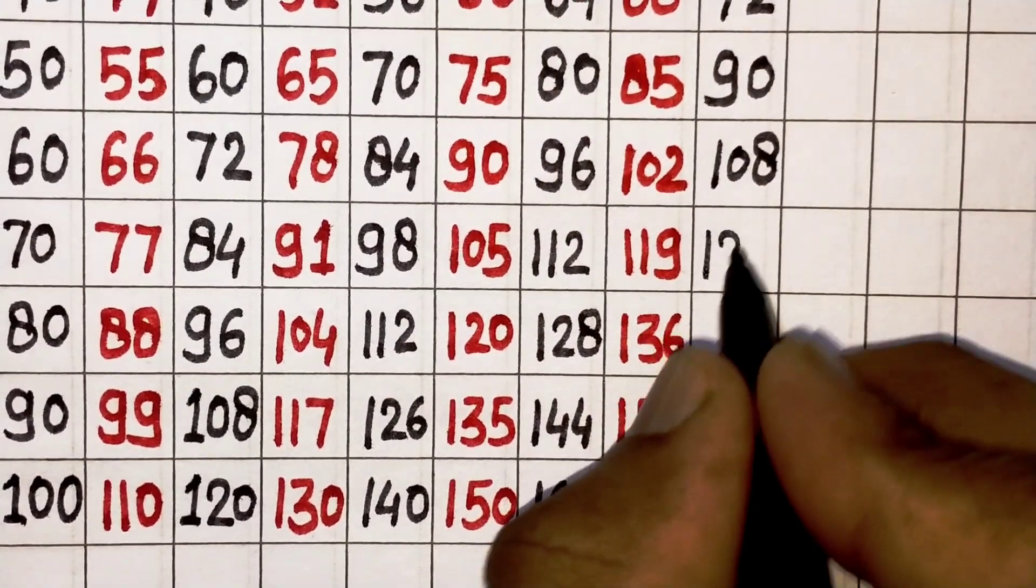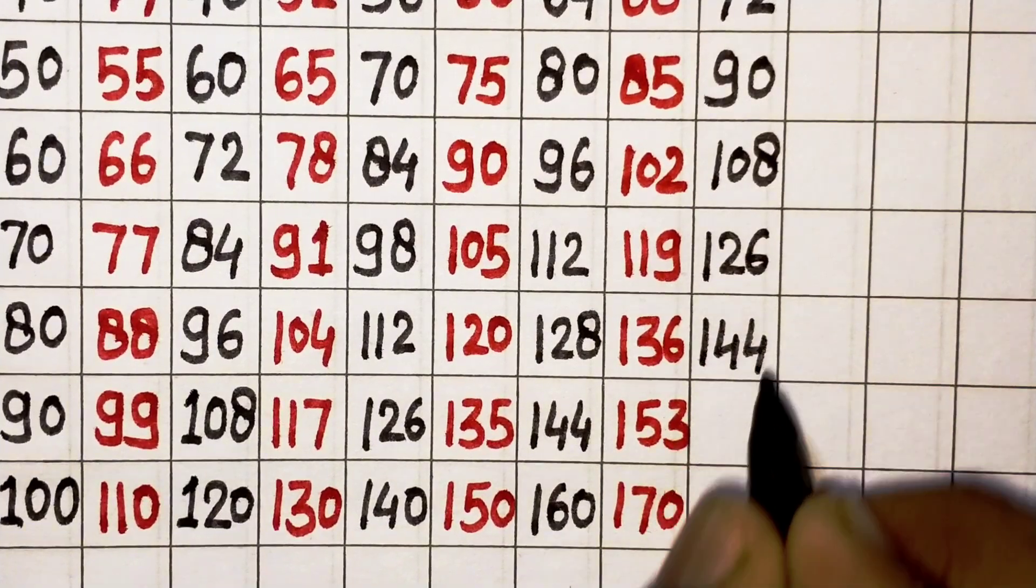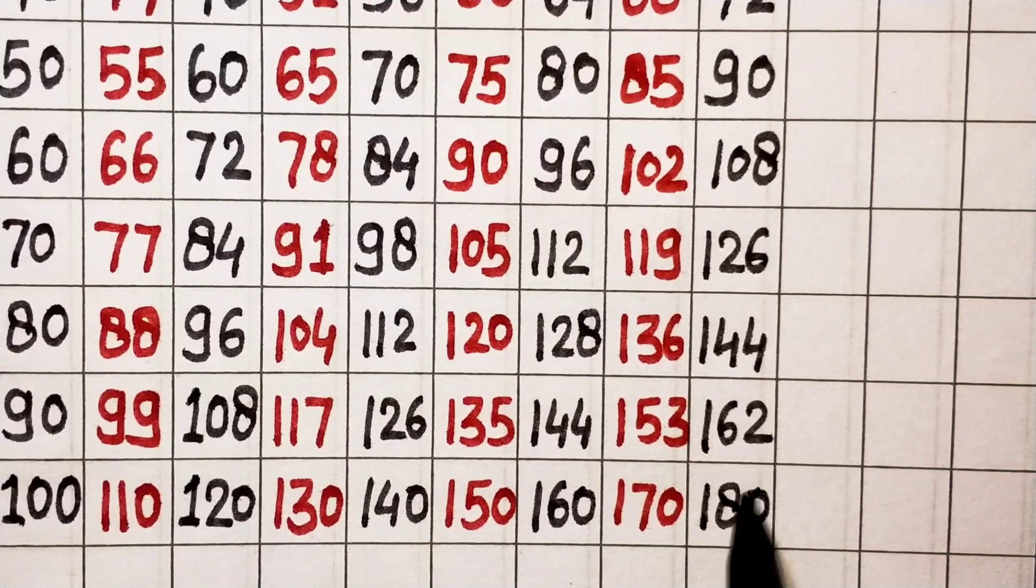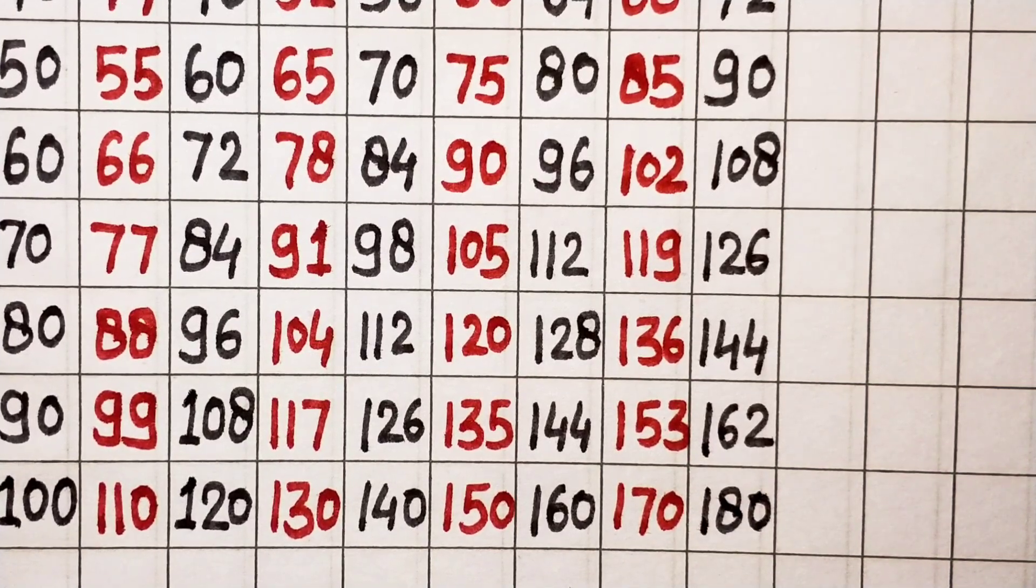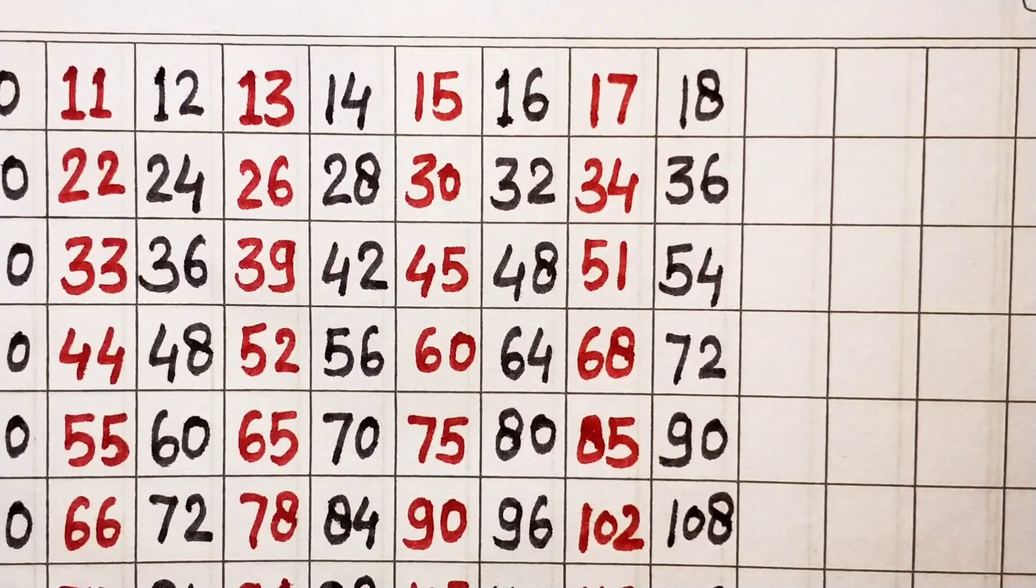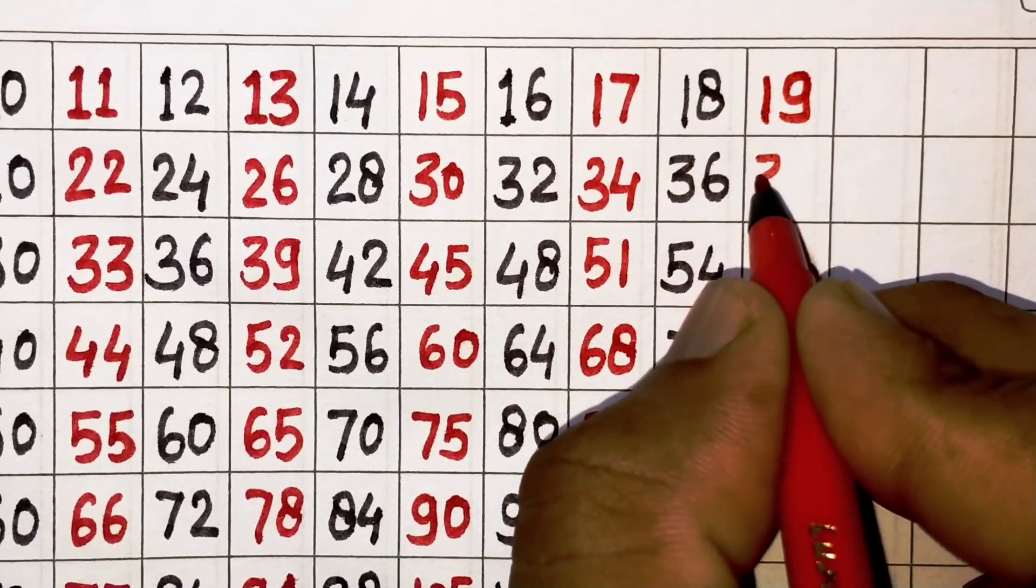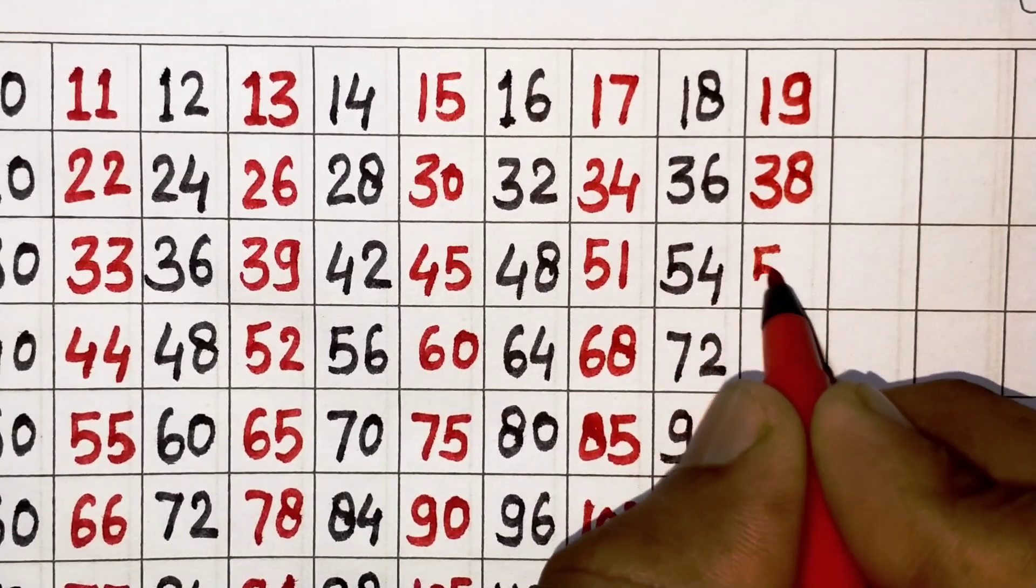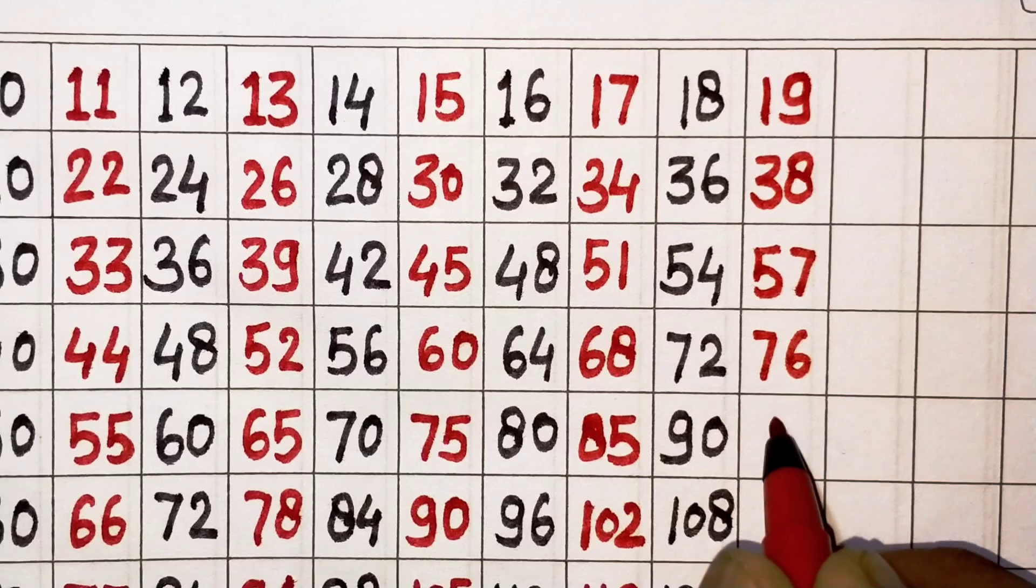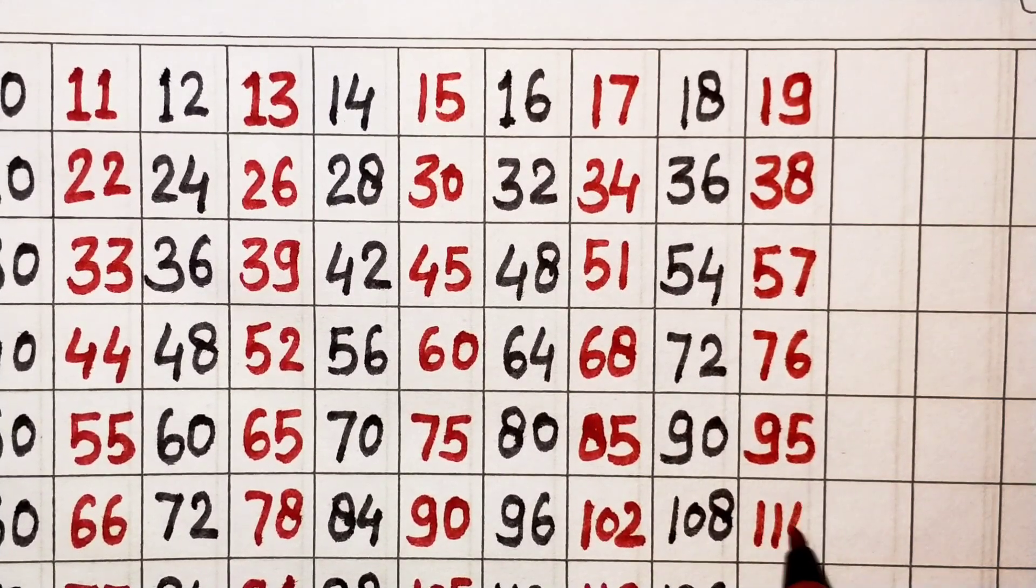18 eights are 144, 18 nines are 162, 18 tens are 180. Next, 19. 19 ones are 19, 19 twos are 38, 19 threes are 57, 19 fours are 76, 19 fives are 95, 19 sixes are 114, 19 sevens are 133.